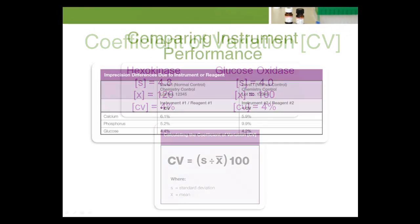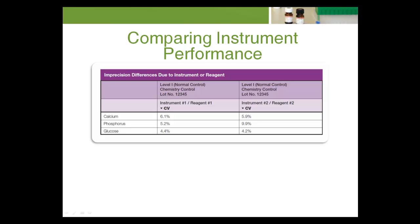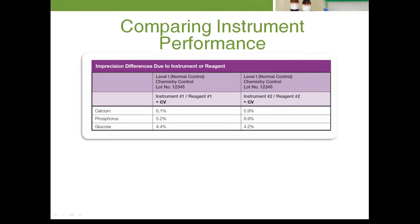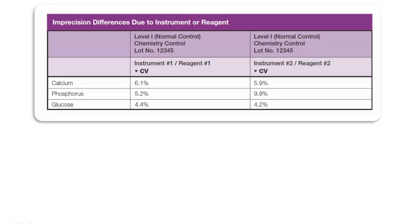The coefficient of variation can also be used when comparing instrument performance. In this example, instrument 1 and instrument 2 have similar precision for calcium and glucose, but instrument 1 demonstrates much better precision than instrument 2 for phosphorus. Because the precision was calculated from data for the same lot number and level of control, the differences in precision are likely due to the instrument or reagent.